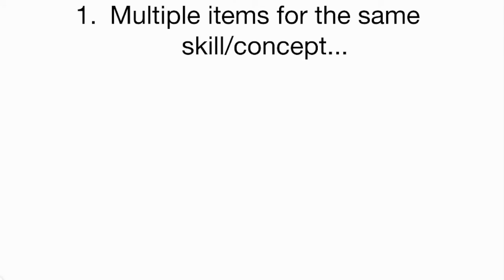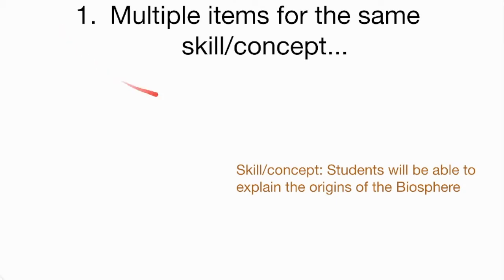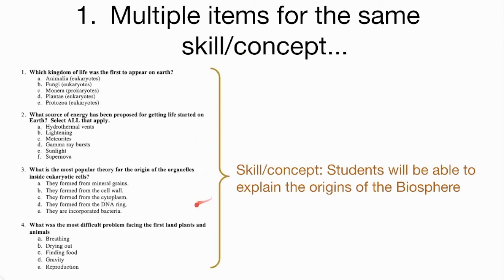Our first suggestion was to have multiple items for the same skill or concept. Let's say the skill we want to gather evidence of is whether students are able to explain the origins of the biosphere. We wouldn't just give them one question — in the same way that for an intelligence test, I wouldn't want just one single question to determine my level of intelligence. We want multiple opportunities to demonstrate understanding, so here we have four different questions, all of which help us gather an understanding of to what degree our students can explain the origins of the biosphere.